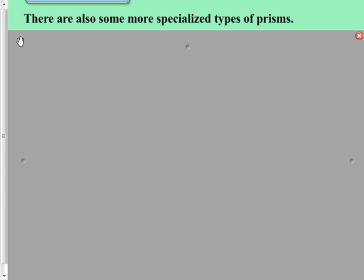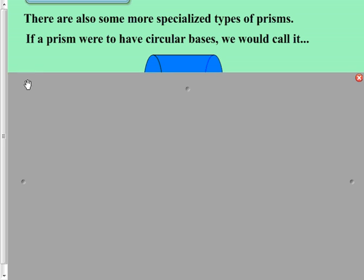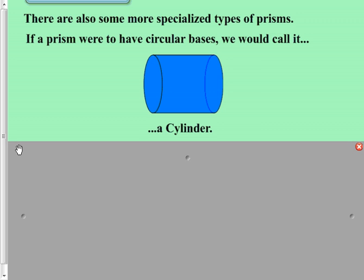Now, there are some more specialized types of prisms. And this deals, in particular, with what happens if its base is not a polygon at all. If a prism were to have circular bases. Now, I'm sure you are well familiar with what this shape is termed. It is a prism because it has two parallel congruent sides that we can call its bases. It just so happens that its bases are circles. Now, we wouldn't call it a circular prism. It has a special name, and I'm sure you already know the special name is cylinder.